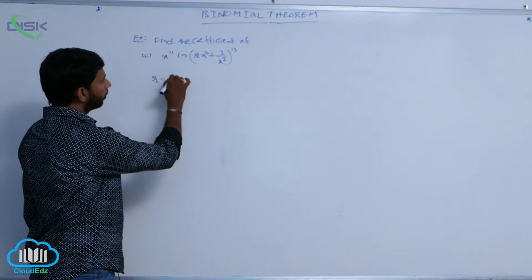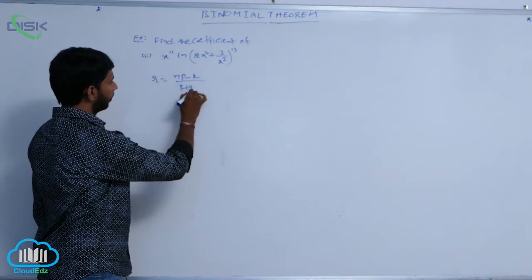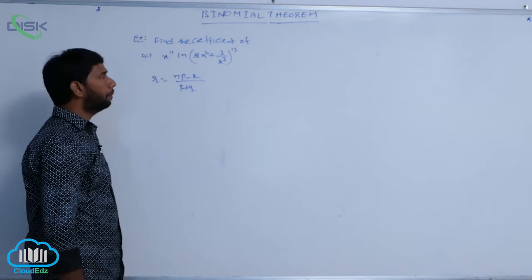Find r by using the formula that is n p minus k by p plus q. r is equal to n p minus k by p plus q.